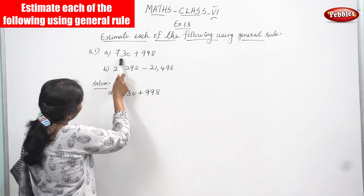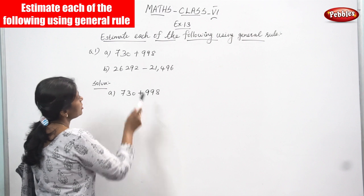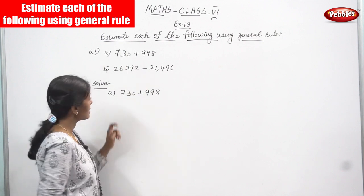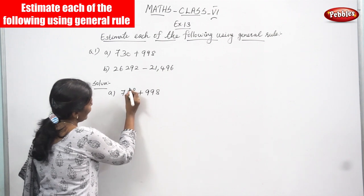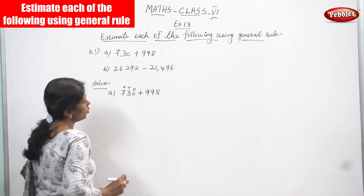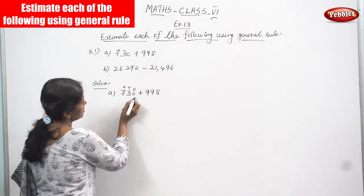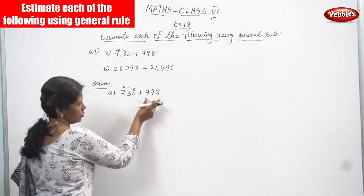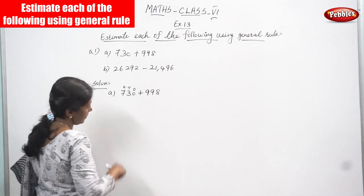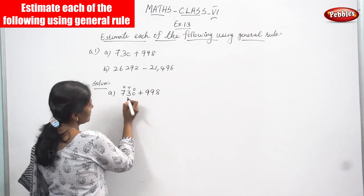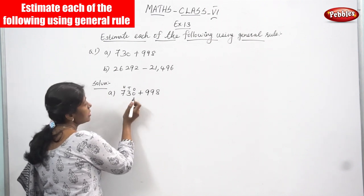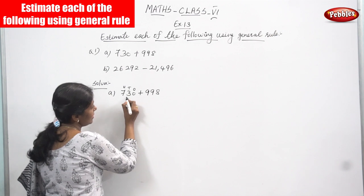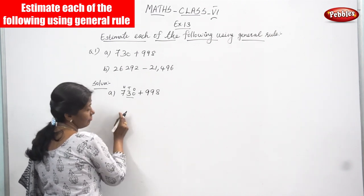Look at this number: 730 plus 998. You have to round up these two numbers. The first one, 730 — this has 1s, 10s, and 100s places. We are going to round to the nearest 100. Even though you want to round to the nearest 100, you have to consider the 10s and 1s. The 10s place is 3 and the 1s place is 0, that is 30. So it is less than 50.